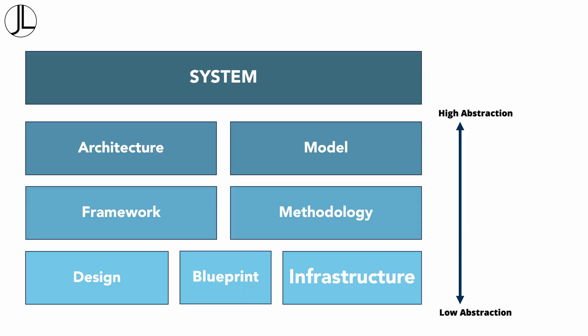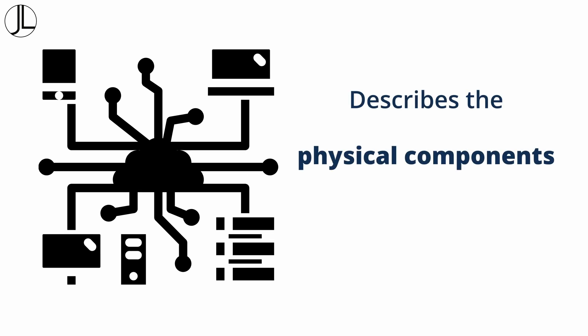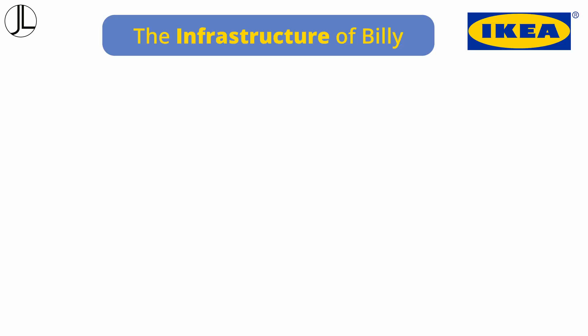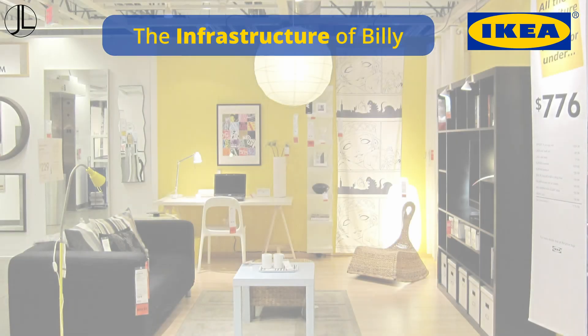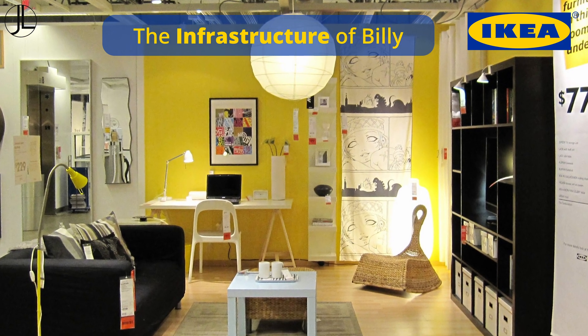And the last term is infrastructure, which describes the physical components and resources that make up a system. The infrastructure for Billy could be the showroom where it is displayed.